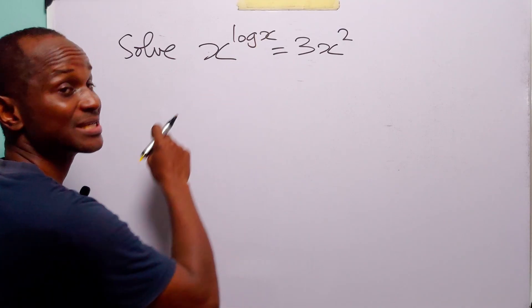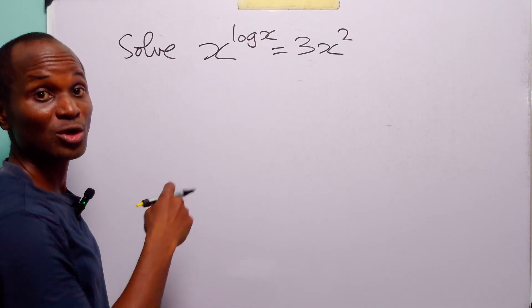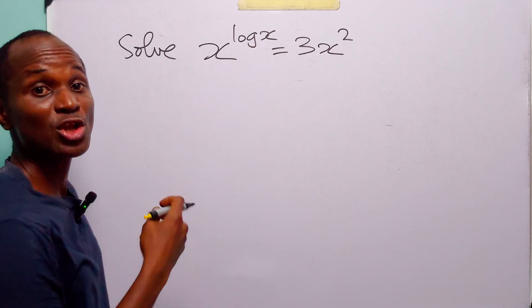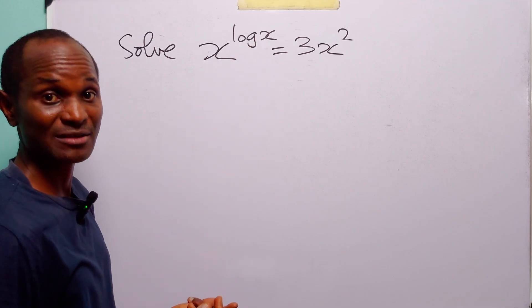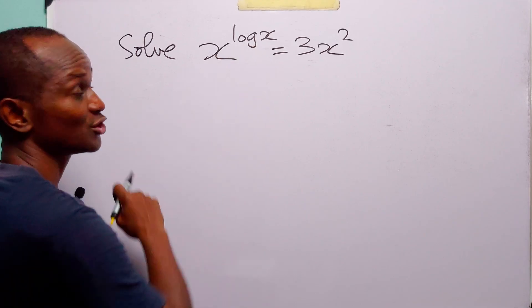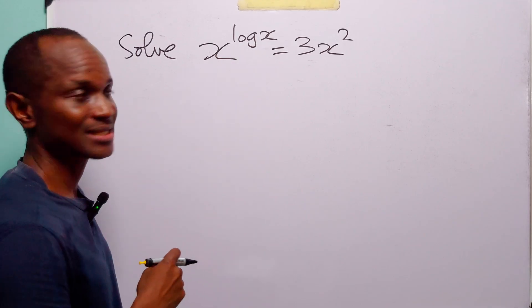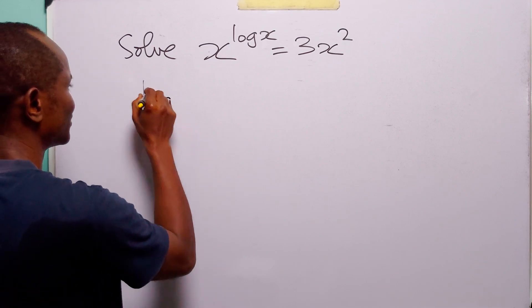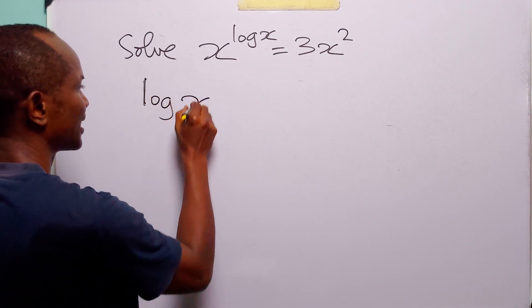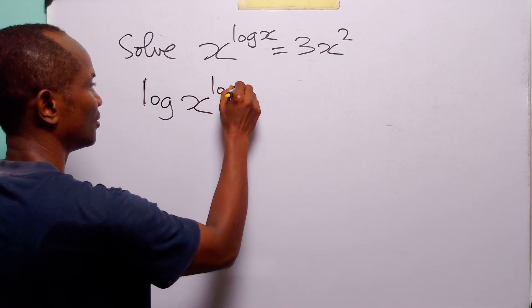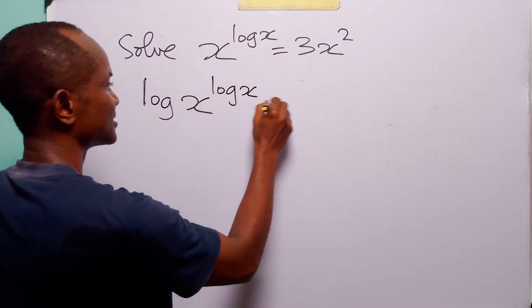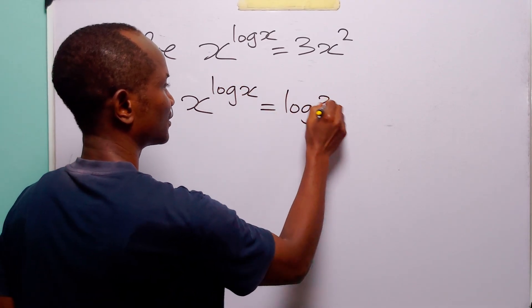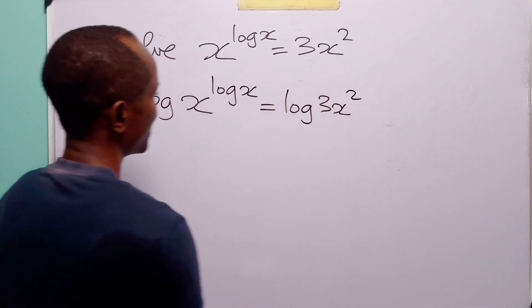Since we are working in base 10 already — remember that when the base of the log is not specified, it means we are working in base 10 — when we take log of both sides of the equation, we have that log(x^(log x)) is equal to log(3x²).